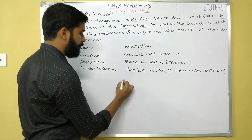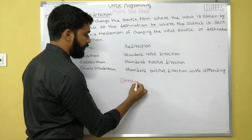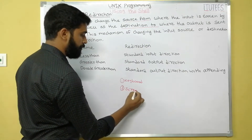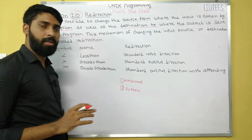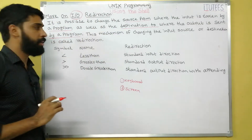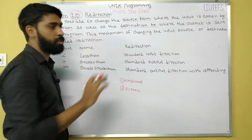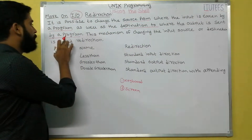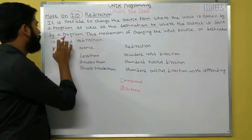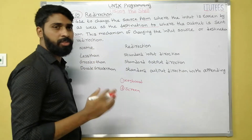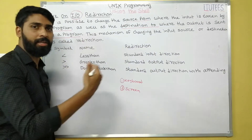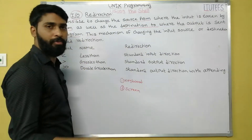The default input is keyboard and the default output is screen. But by using the redirection operators, it is possible to change the source from where your input is taken by a program, as well as the destination to where the output is sent by a program. This mechanism of changing input source or output destination is called redirection.